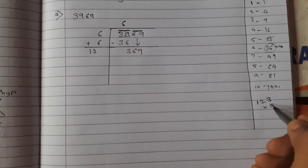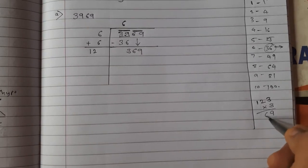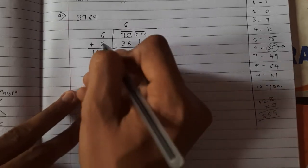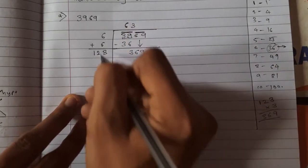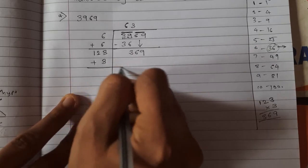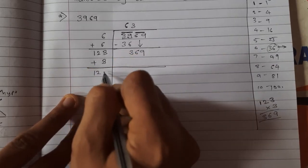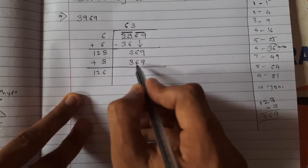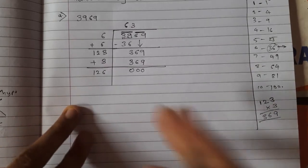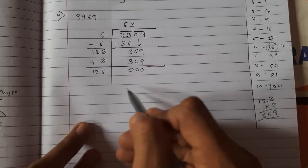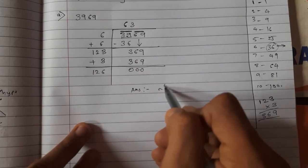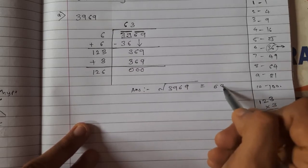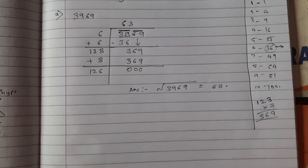I took 3 because 3 × 3 = 9, and in our units place there is also 9. So: 3 × 3 = 9, 3 × 2 = 6, 3 × 1 = 3 — I got the number 369. Write 3 in the quotient, write it in the divisor too, so 123 + 3 = 126, and 123 × 3 = 369. Remainder is 0. So the square root of 3969 is 63.